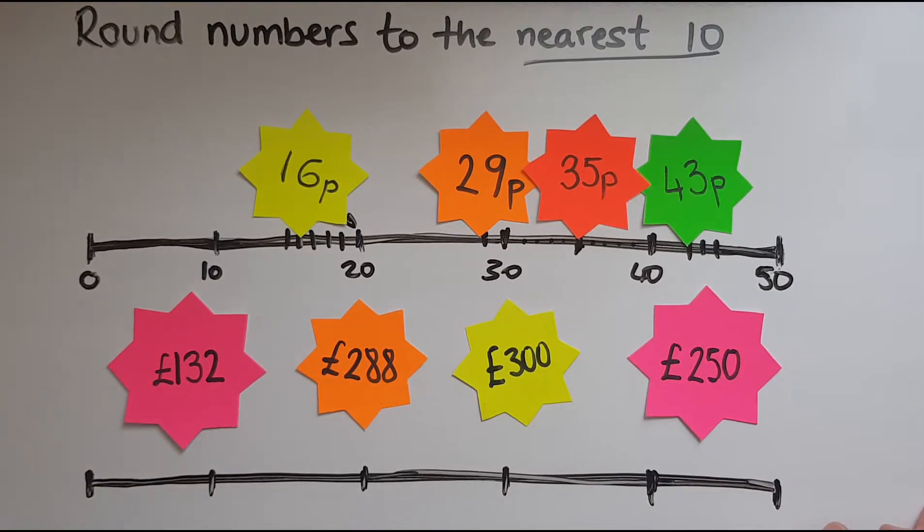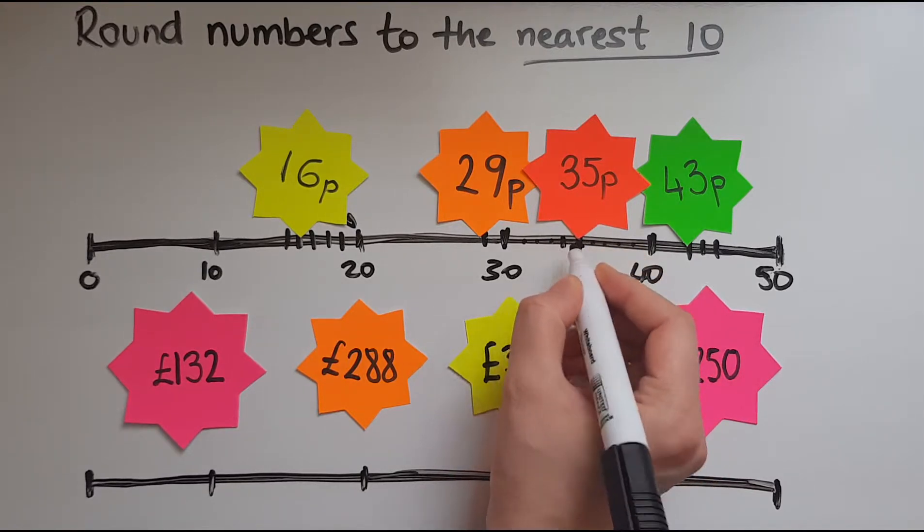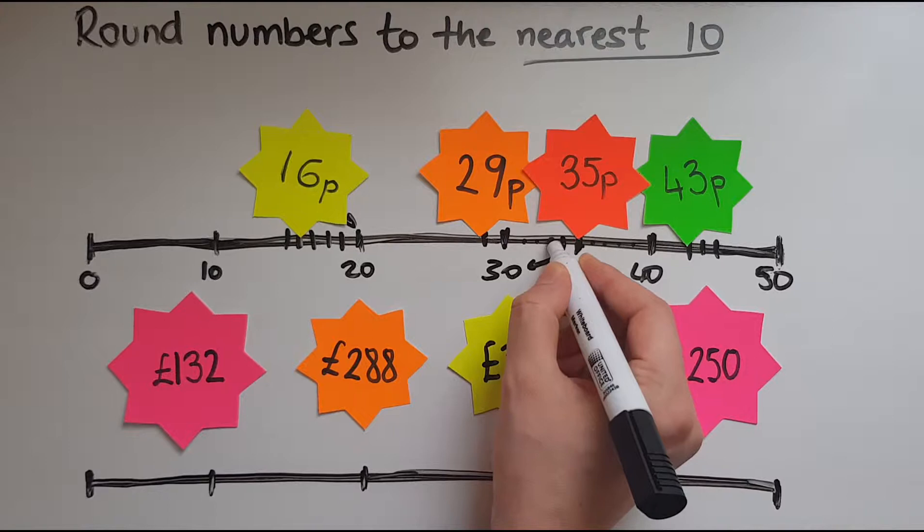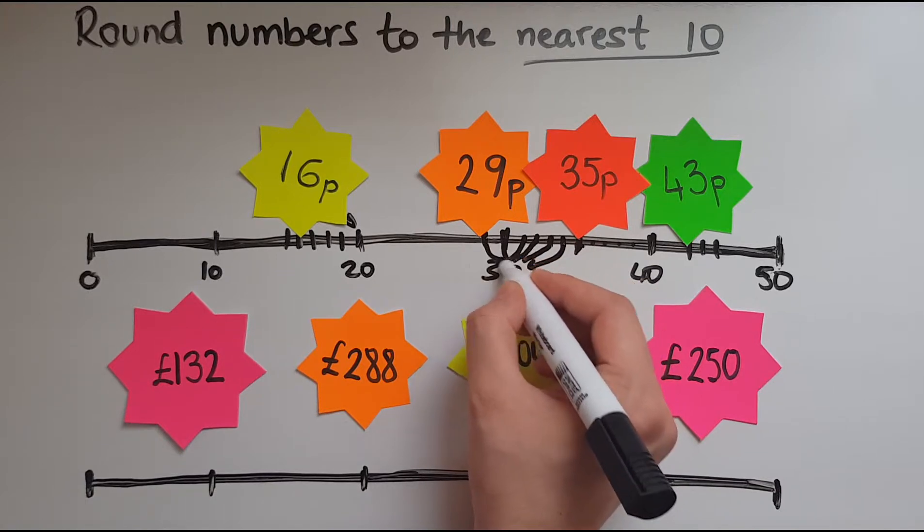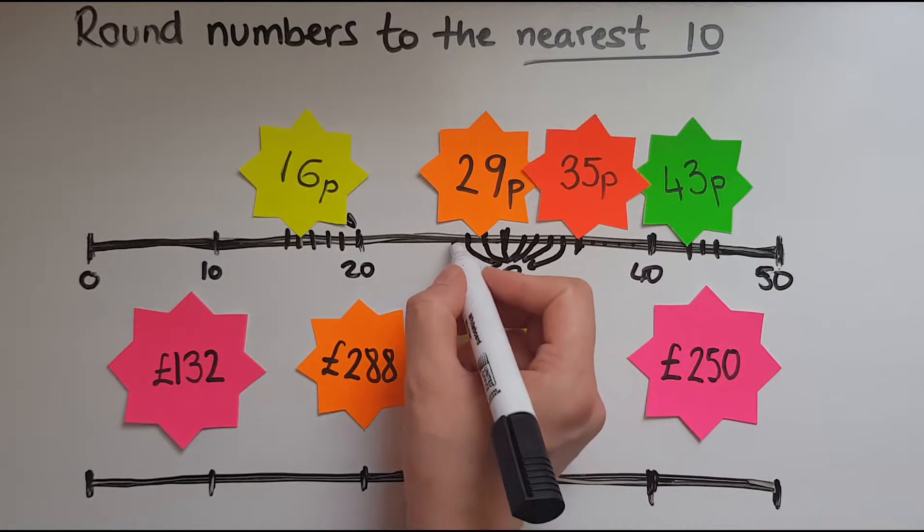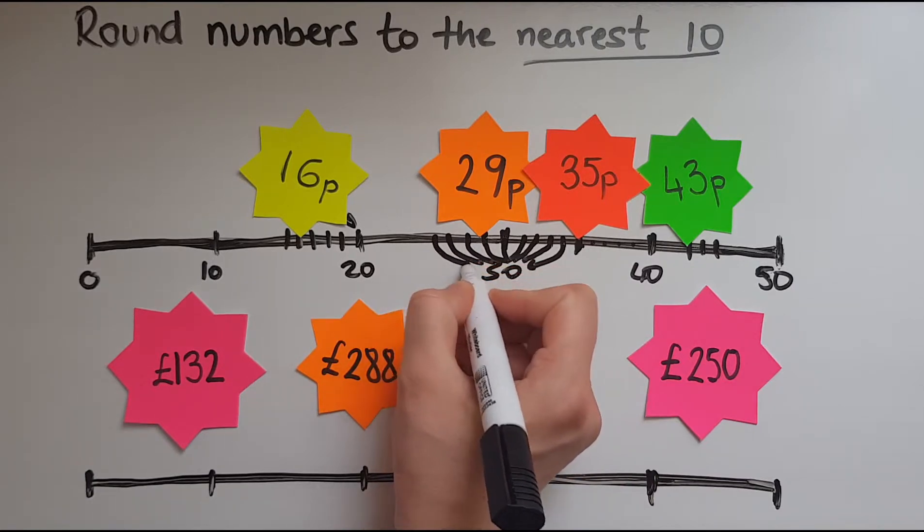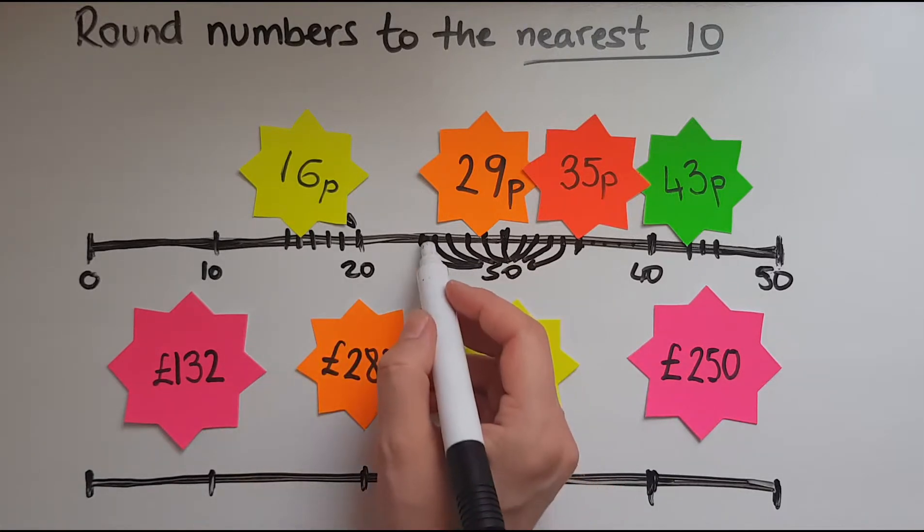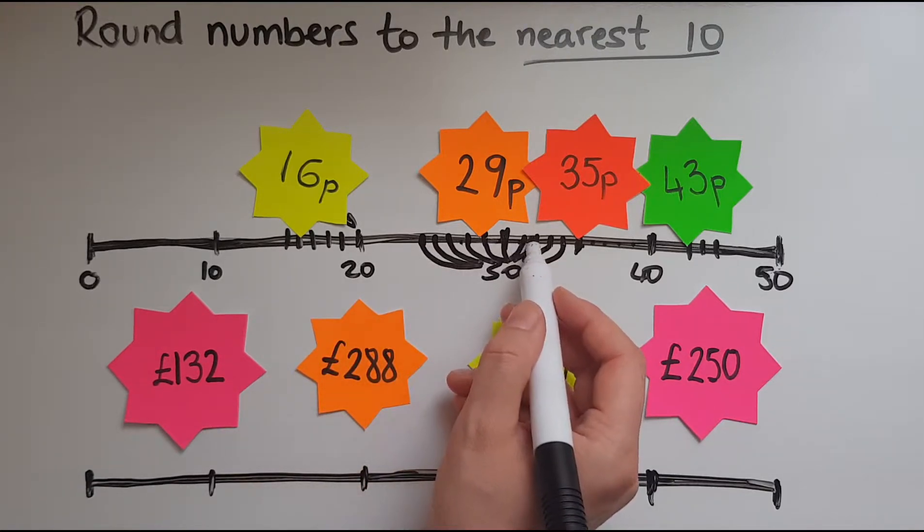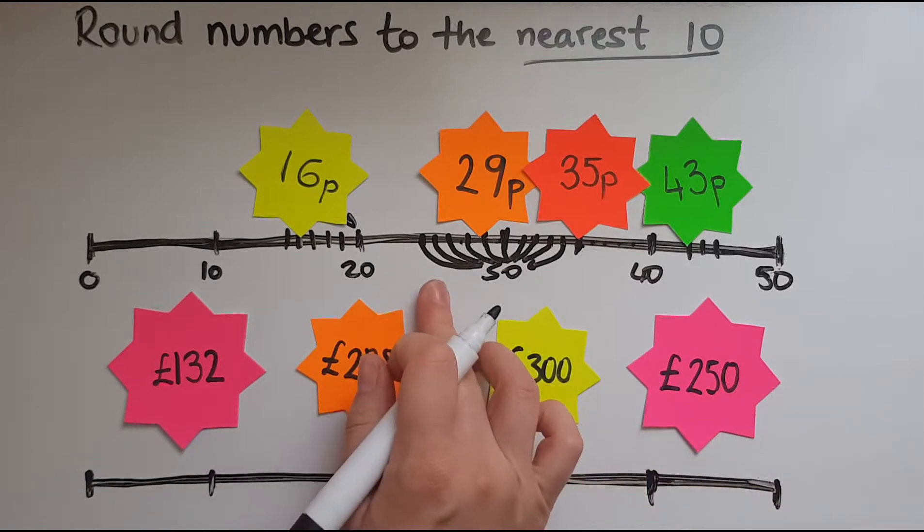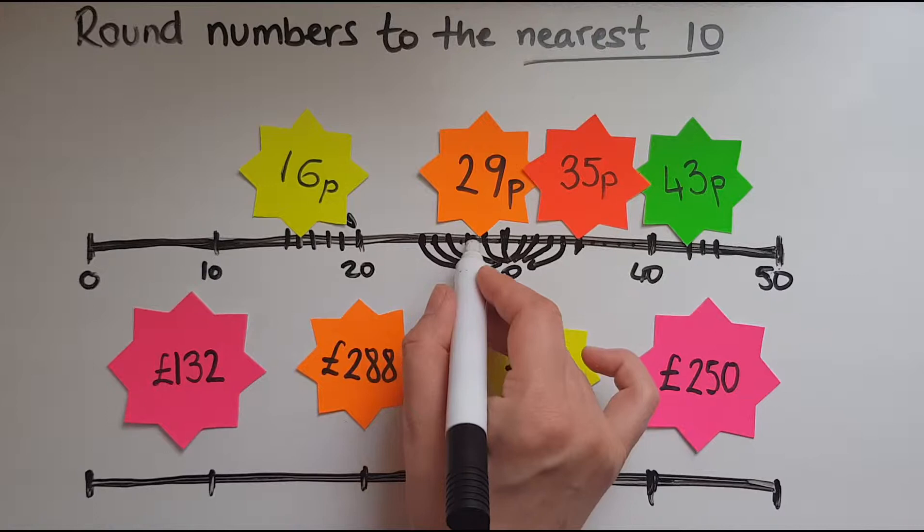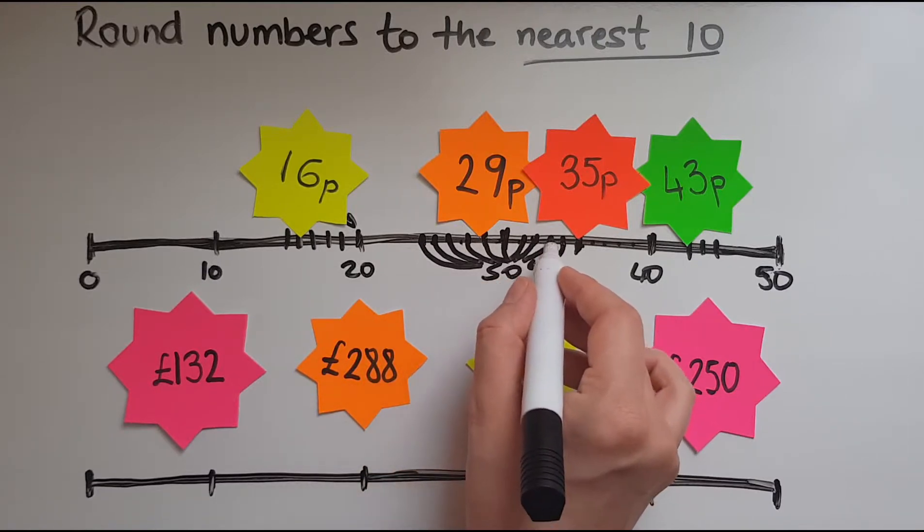Now you're probably thinking why is that the case? Let's have a look at which numbers will be rounded to 30. So 34 is one so that's going to go to 30, 33, 32, 31, 30, 29, 28, 27, 26 and 25. So there are 10 numbers that would be rounded to 30 and these are 25, 26, 27, 28, 29, 30, 31, 32, 33 and 34.